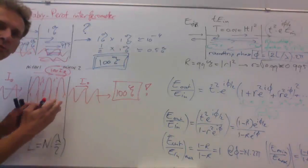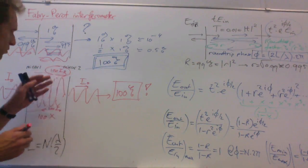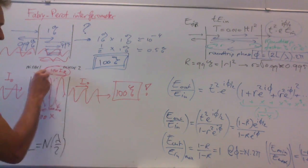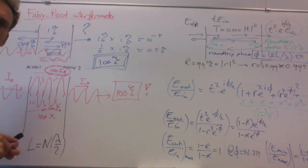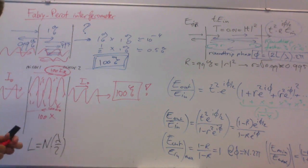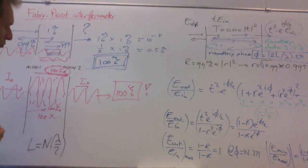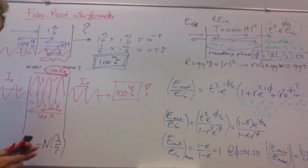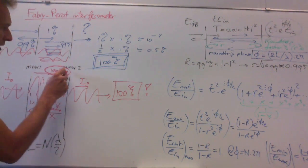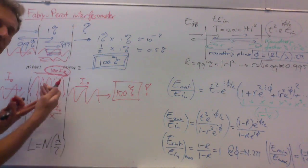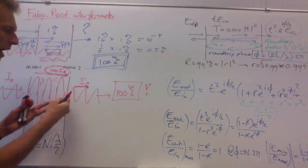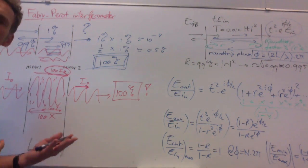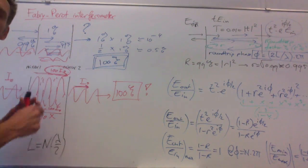As a result, the field builds up to enormous proportions. The field in between the two mirrors can be a factor of 100 larger than the incident field, a factor of 100 for the field propagating to the right, a factor of 100 for the field propagating to the left, and a small fraction, 1% actually, of this light leaks out such that the output intensity is equal to the input intensity. And that's the magic of interference in this Fabry-Perot cavity.